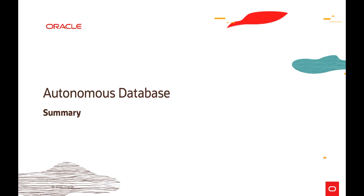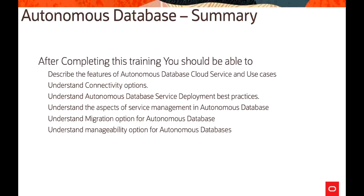To summarize what we have covered in this session: we discussed various features of the Autonomous Database Cloud Service and its use cases, understood different comparisons between services like automated versus autonomous, covered connectivity options, looked at database service deployment best practices, how service management is handled, migration options for autonomous database, various manageability and security options, and high availability aspects. In essence, Autonomous Database provides a database using the Exadata infrastructure — the best database platform to run any kind of critical workload of any size or scale.